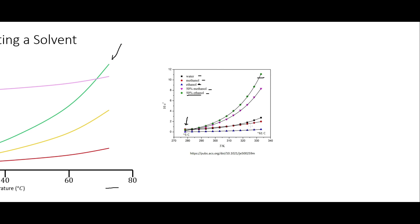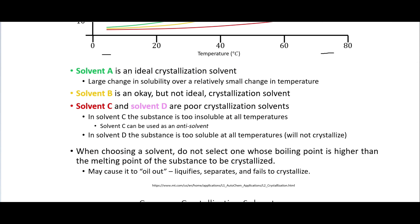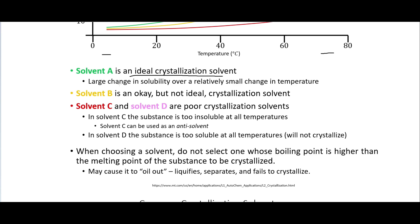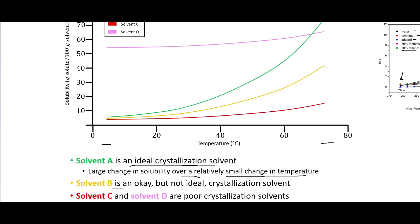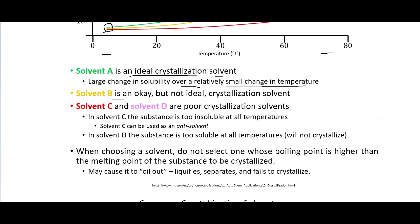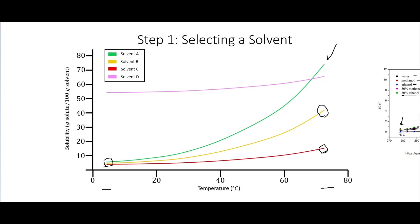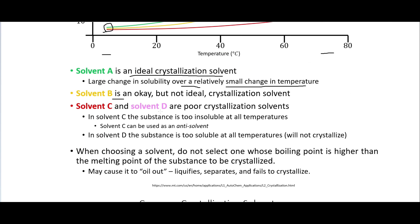Pure ethanol here is very insoluble even at high temperatures and at low temperatures. Solvent A is the ideal crystallization solvent — very soluble at high temperatures, very insoluble at low temperatures — so we want this large change in solubility over a relatively small change in temperature. Solvent B is okay but not ideal. Solvents C and D are both poor crystallization solvents: solvent C is very insoluble at all temperatures and can be used as an anti-solvent, while solvent D is very soluble at all temperatures and will therefore not crystallize.